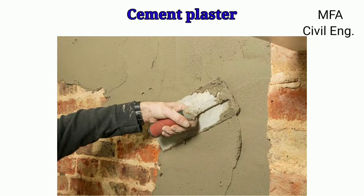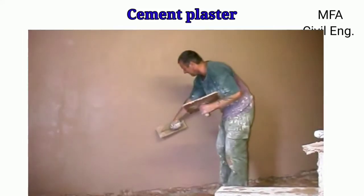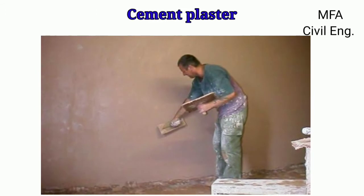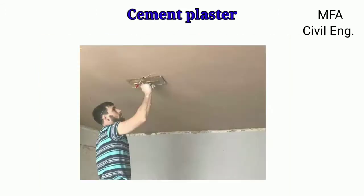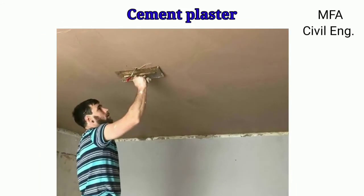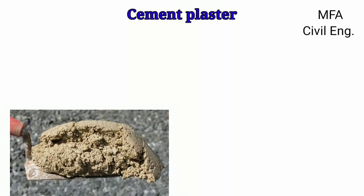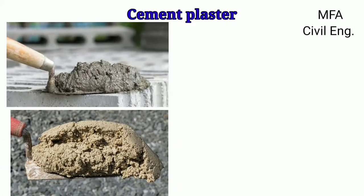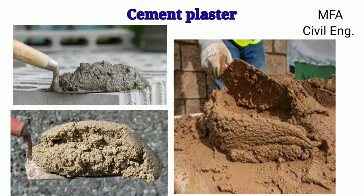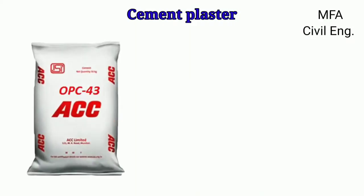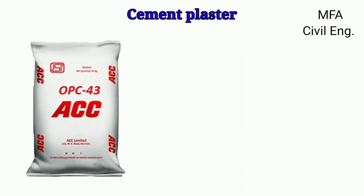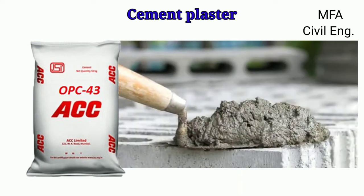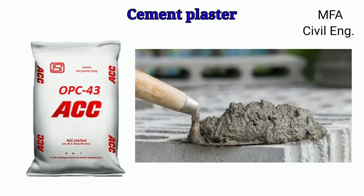Plastering is a covering with material of various composition applied either externally or internally to the wall, partition, lathe, and ceiling to cover the rough wall by lime, cement, or mud mortar. When cement is used as a binding material in making the mortar for plastering, it is called cement plaster.